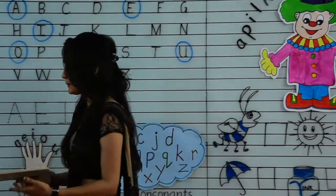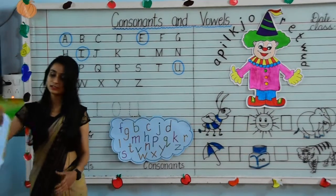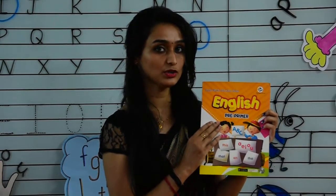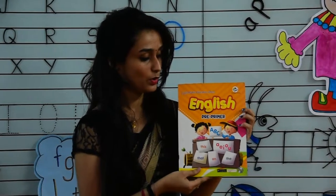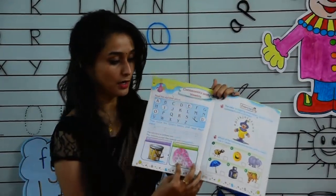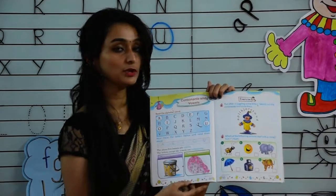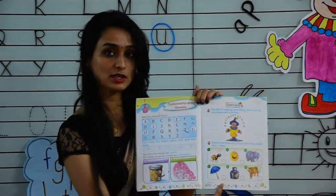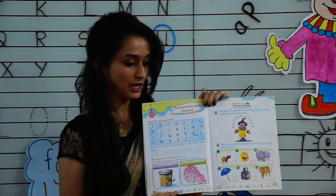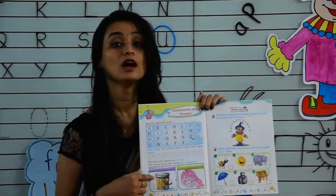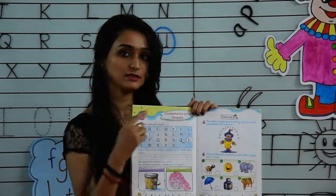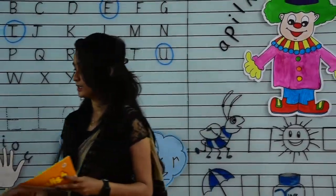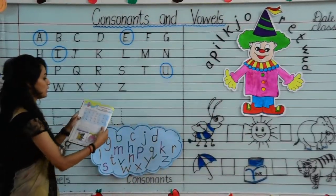Remember this. Now we will do some exercises in your pre-primer book. So kids, take out your pre-primer book and open page number 12. Today we will do page number 12 and page number 13. Don't forget to mention the date and the classwork on the top.